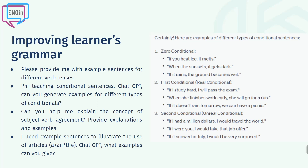Please provide me with example sentences for different verb tenses. I'm teaching conditional tenses – ChatGPT, can you generate examples for different types of conditionals? Can you help me explain the concept of subject-verb agreement? Provide explanations and examples. I need example sentences to illustrate the use of articles – ChatGPT, what examples can you give?